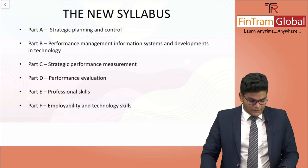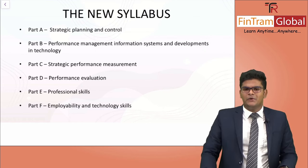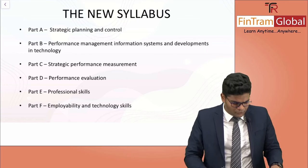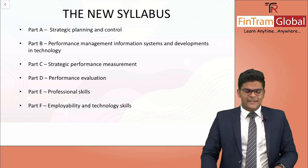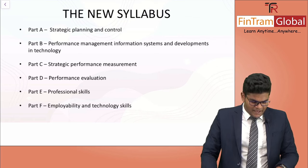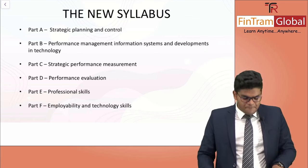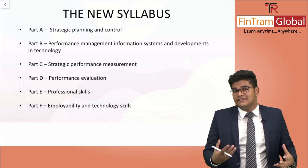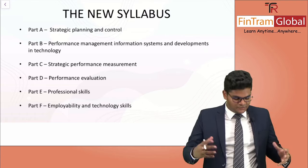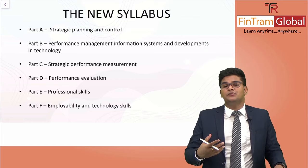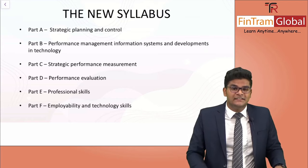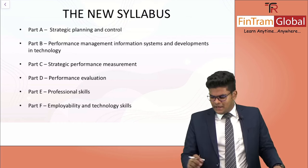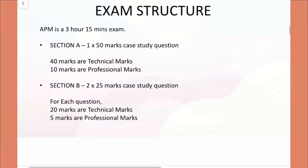Part B is Performance Management Information Systems and Developments in Technology, where we learn about a lot of technological aspects, and there are a lot of new technology-related topics added into this syllabus area. In Part C we have Strategic Performance Measurement. In Part D there is Performance Evaluations. Part E is Professional Skills, which has been introduced into the optional papers. Part F is Employability and Technology Skills — basically the computer skills you need to attend the CBE exam. As for the professional skills, these are skills you need to demonstrate when you write your answer within the CBE.